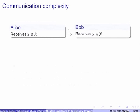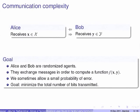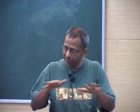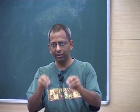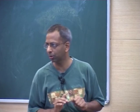So what is communication complexity? There are two parties, Alice and Bob. They each have an input — Alice's input is X, Bob's input is Y — and they communicate by sending messages to each other. Since they are randomized, we allow some probability of error. The goal is to compute a certain function. They know the function in advance, come up with a strategy, then inputs are handed over. Based on their strategy, they communicate and in the end declare the answer.